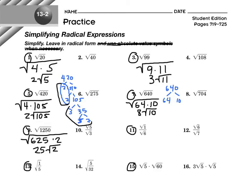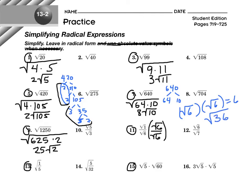Moving on to ones with fractions. Based on our rules of radicals, we can't have a radical in the denominator, so we need to rationalize the denominator. We multiply by a value equal to 1 that gets rid of the radical — that is root 6 over root 6. Why does that work? Root 6 times root 6: using the product of radicals property, that's the square root of 36, which is 6. So the denominator becomes 6, and the numerator is root 6. Therefore, 1 over root 6 equals root 6 over 6.